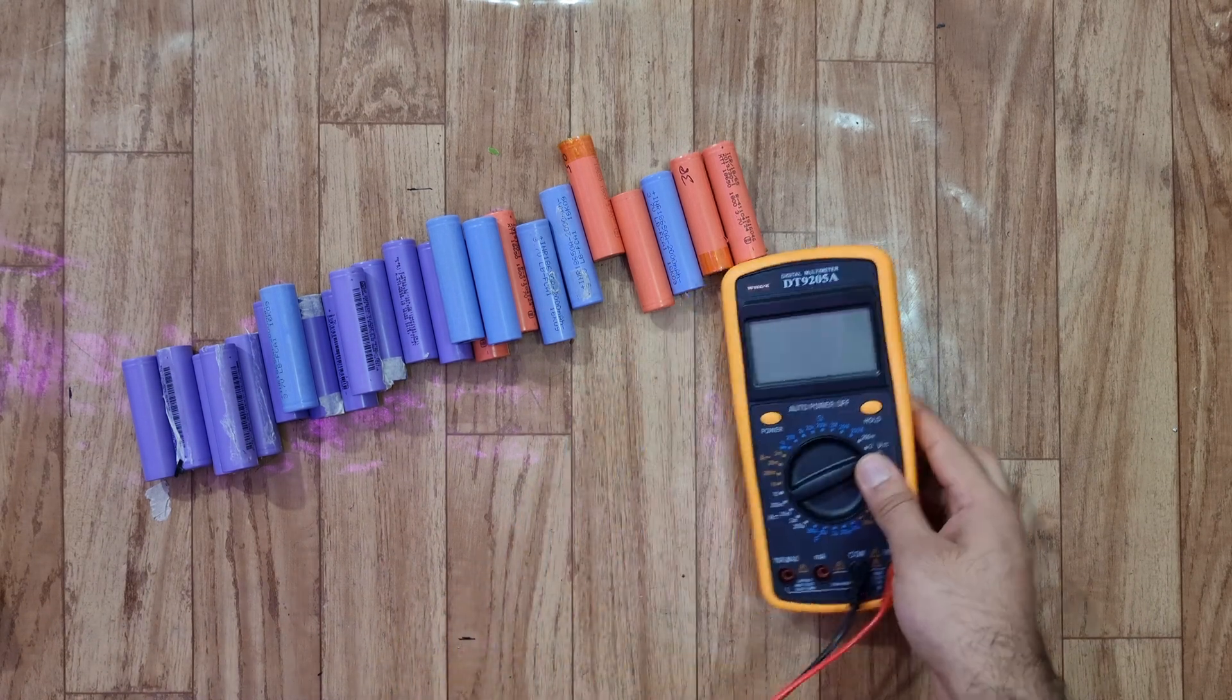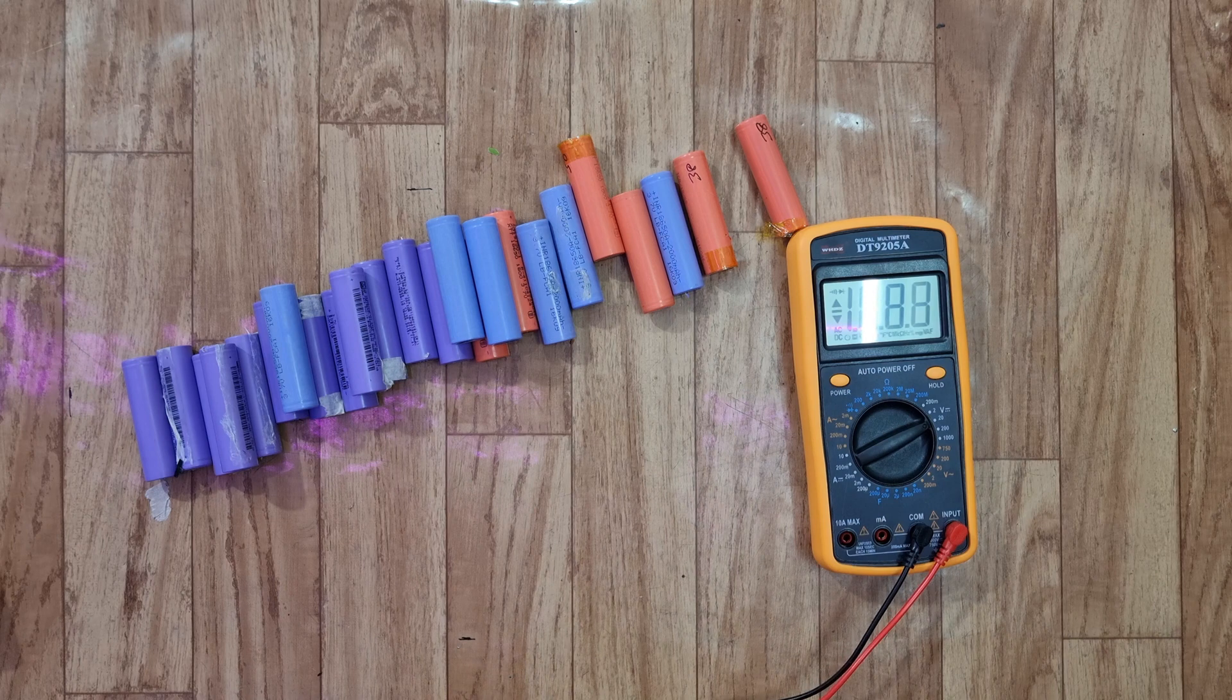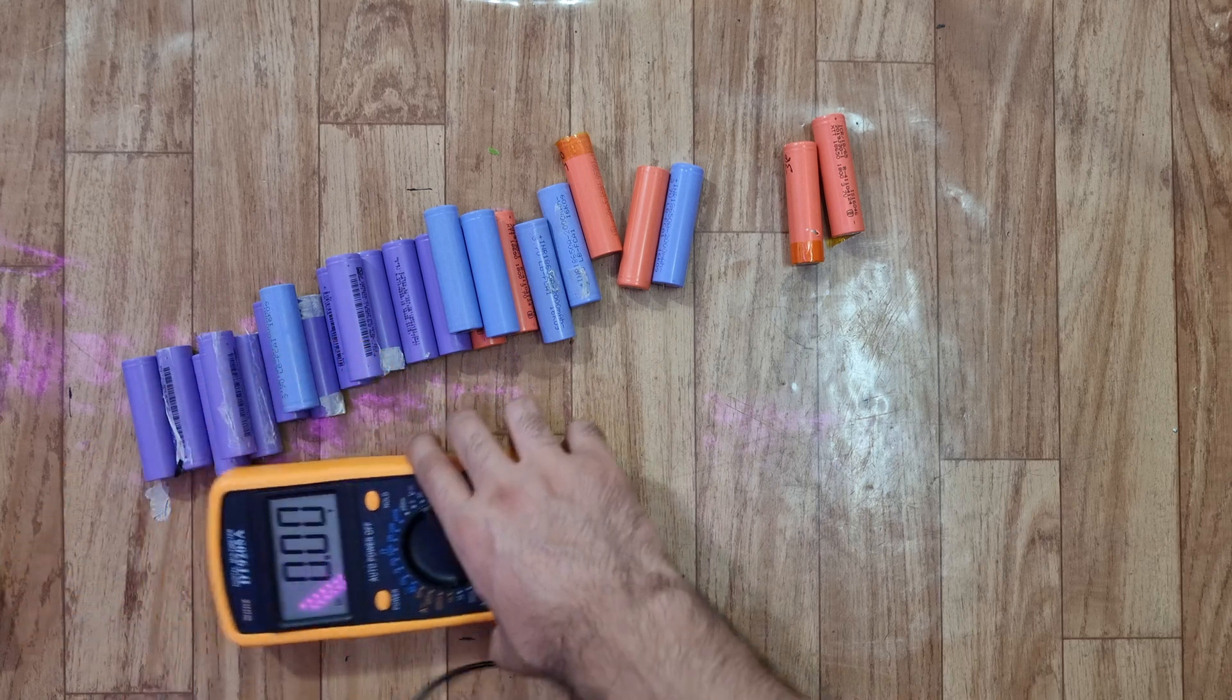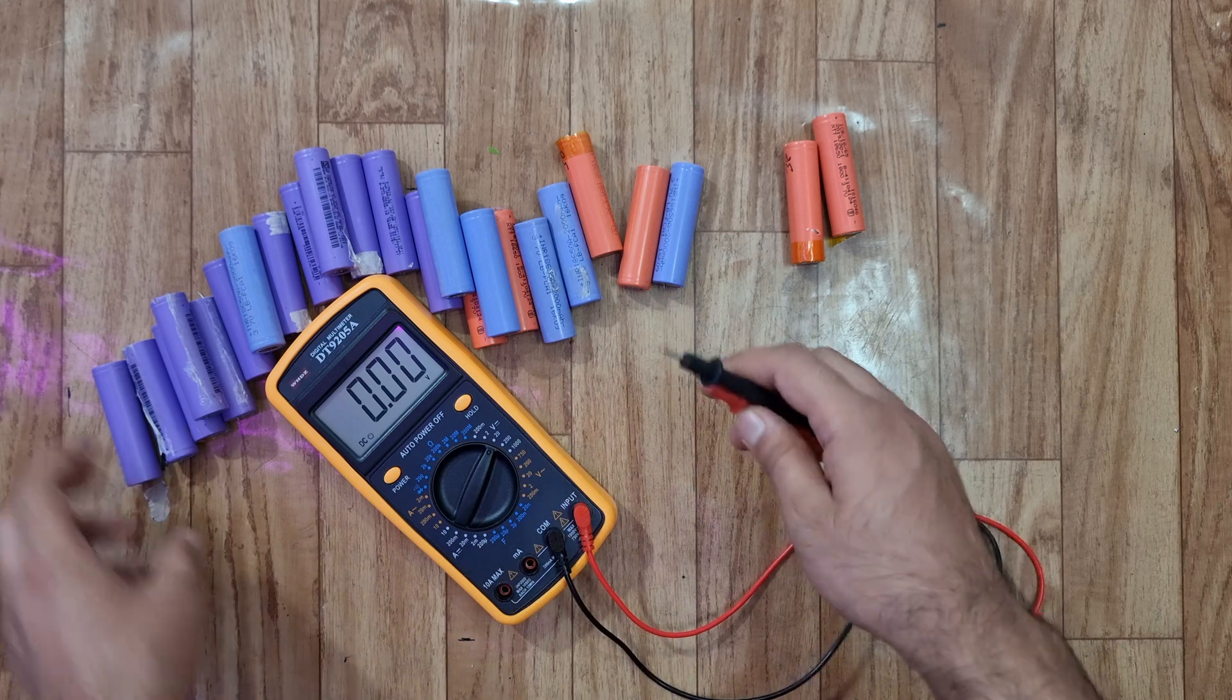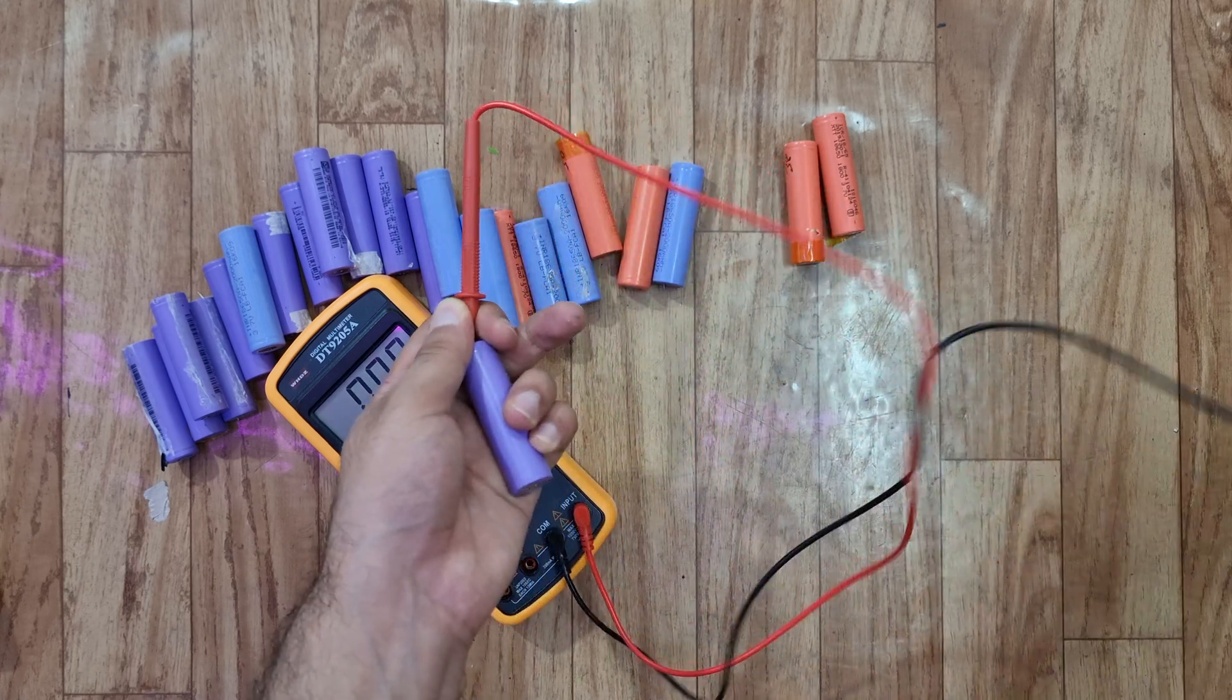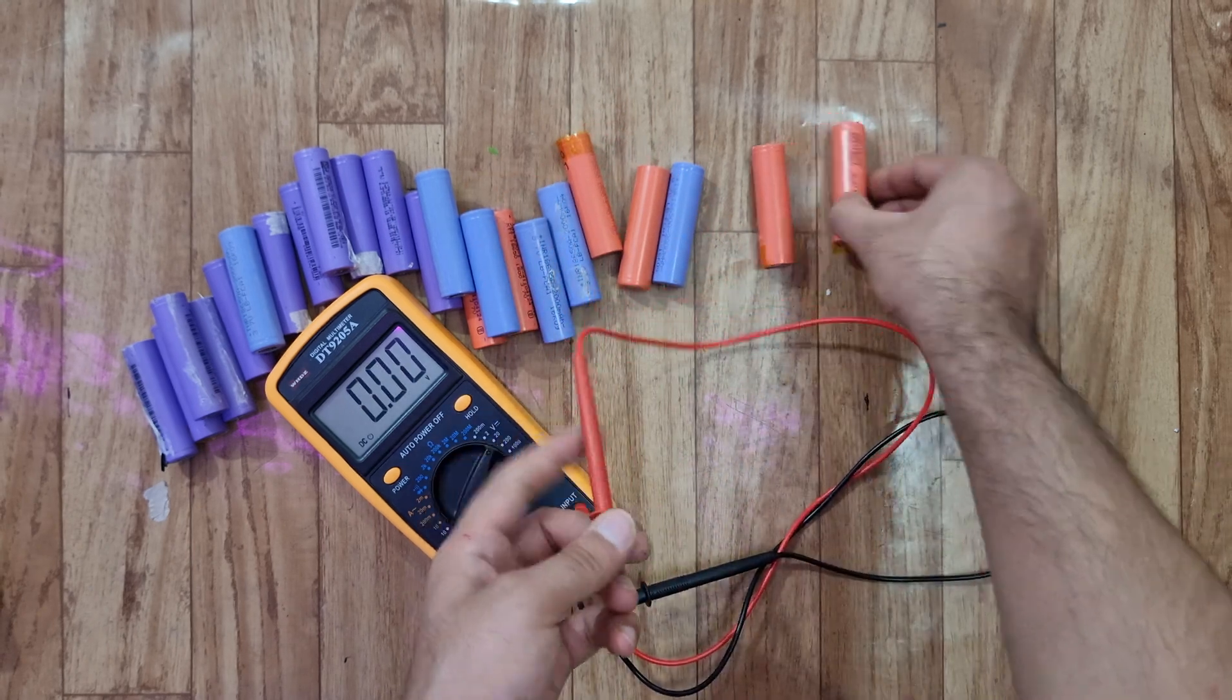Now as all the cells are separated out, we will use a multimeter to test them. We will see which one is good and which one is bad. We will set the multimeter on 20 volts DC and start testing them one by one. We will connect the red probe to positive and the black probe to negative. And as you can see, we are getting 4 volts, which means that this one is good. Now we will test all of them.